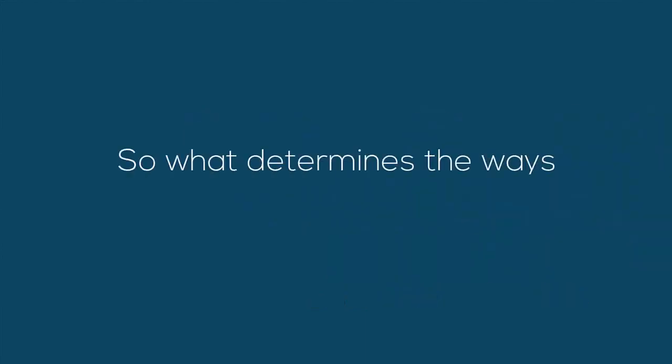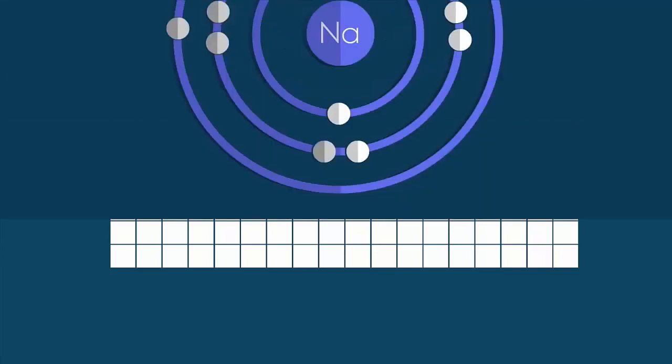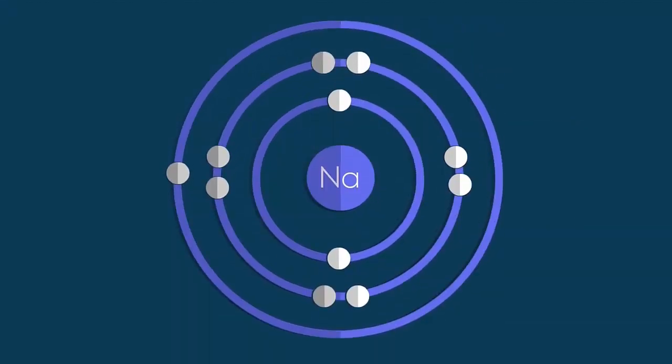So what determines the ways in which elements combine? Well, it depends upon their positions in the periodic table and on how many bonds they can form. Look at sodium - it has one electron in its outer shell, which it loses to form sodium plus.